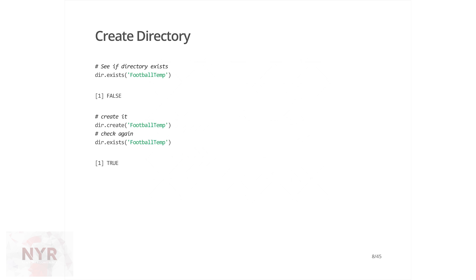The first thing we've got to do is create a folder to download them to. If you're doing this in Bash, you would do mkdir. In R, you use dir — first I'm checking if it exists with dir.exists, and if it doesn't, dir.create creates a directory in R. We just saved ourselves a trip to Bash.